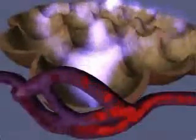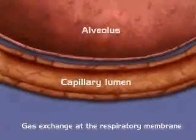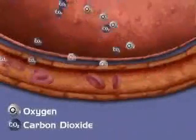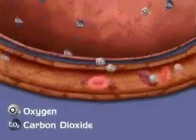Now, let's zoom into a higher magnification view of gas exchange at the respiratory membrane. Red blood cells in the capillary adjacent to the alveolus release carbon dioxide and bind oxygen.